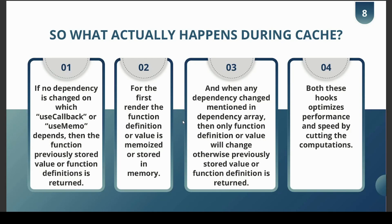If no dependency that useCallback or useMemo depends on has changed, then the previously stored function definition or value is returned. For the first time, the function definition or value is always computed fresh and stored in memory. When any dependency in the dependency array changes, the function definition or value will update; otherwise, the previously stored value is returned. Both hooks optimize performance and speed by cutting down computations.